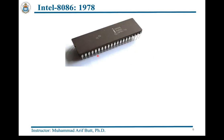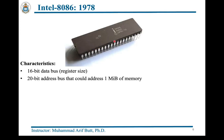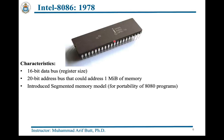In 1978 Intel launched the 8086 microprocessor, which left a mark in history and is still referred to as the x86 architecture. The 8086 was a 16-bit processor with an addressable memory of 1 megabyte, which was 16 times greater than what the 8080 could support (64 KB). To port all assembly programs running on 8080 to run on 8086 as well, Intel introduced the concept of the segmented memory model. The 8086 chip was available in a 40-pin DIP package, composed of around 29,000 transistors, and could operate at a clock speed ranging from 5 to 10 megahertz.